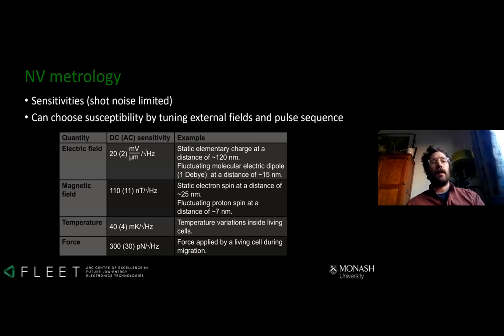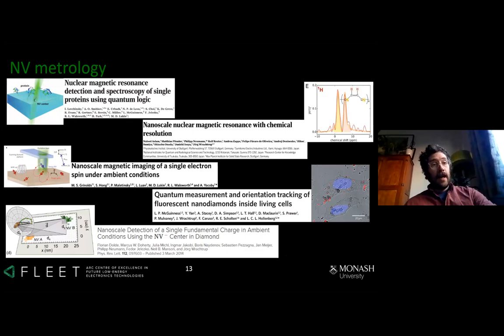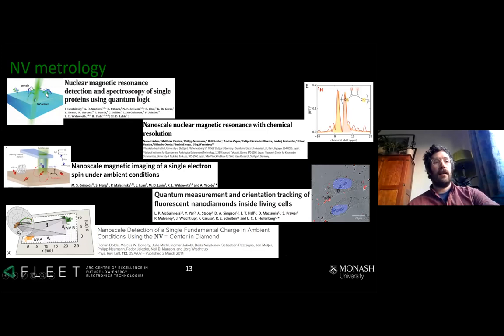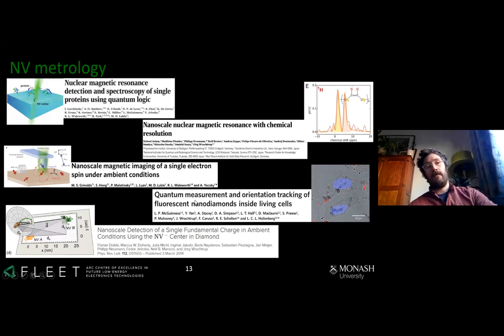Since the first single-site paper in 1997, the NV research field has exploded with some impressive examples recently: NMR detection of single proteins, pushing NMR frequency resolution down to hertz to see single chemical shifts, imaging single electrons magnetically, measuring a single electron electrically, and because diamond is a robust inert material, people have even put NV centers inside living cells to do magnetometry in extreme environments.